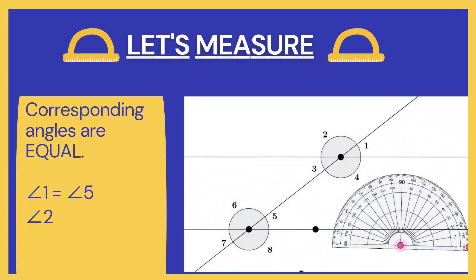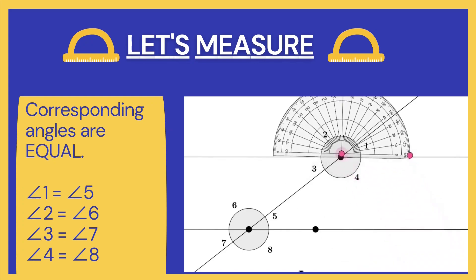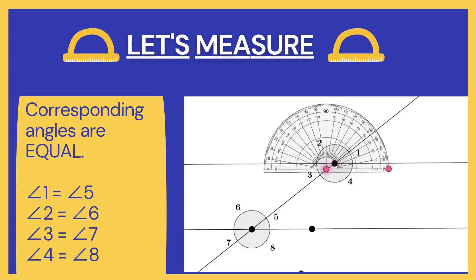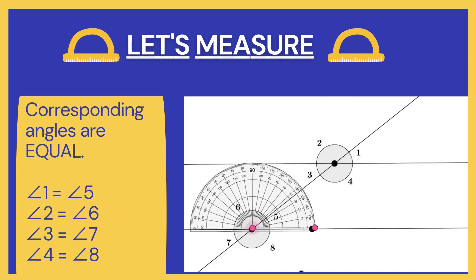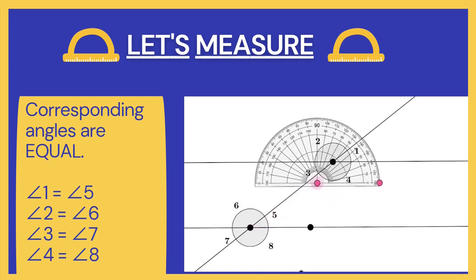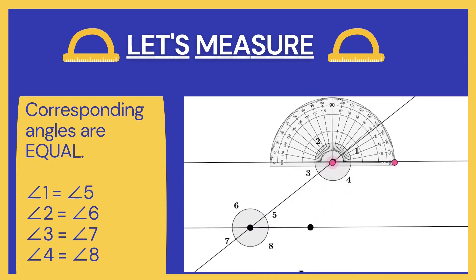Now let's measure the corresponding angles using a protractor and see if they are actually equal. From this figure, you can see that angle 2 and angle 6 are one pair of corresponding angles. Let's measure them. I am keeping the protractor here — adjusting it properly, we can measure that angle 2 is 140 degrees. Now keeping the protractor at angle 6, we can see that angle 6 is also 140 degrees. So these two are corresponding angles and will always be equal. Similarly, we can measure the rest of the pairs of corresponding angles.